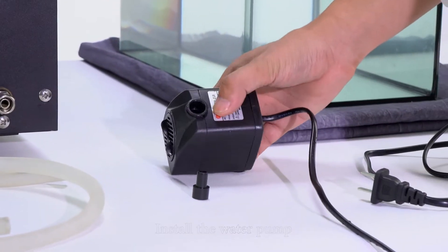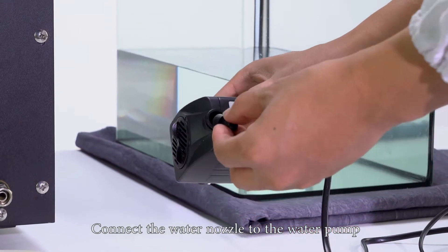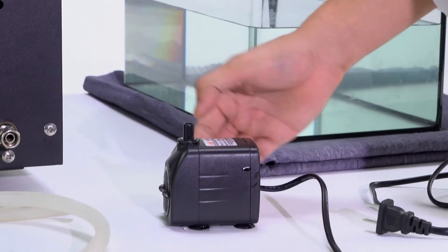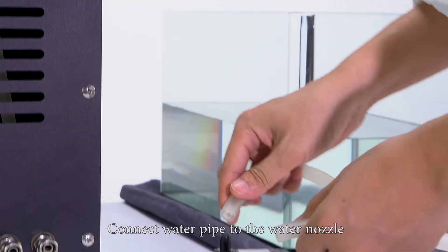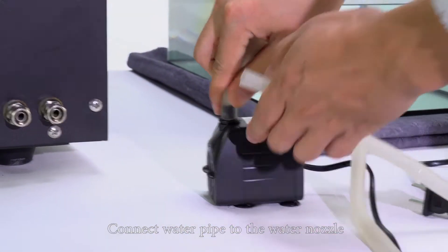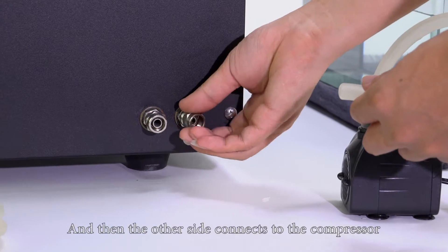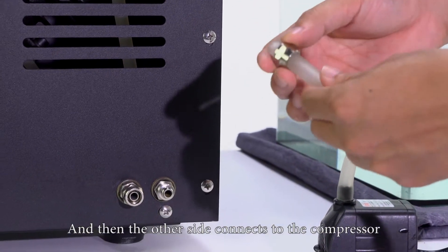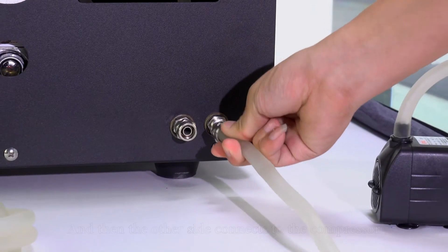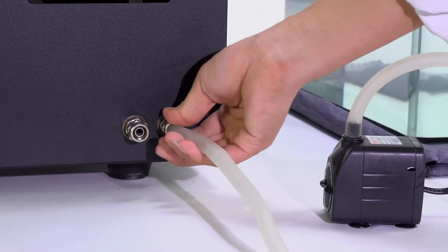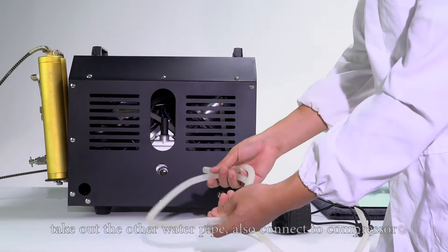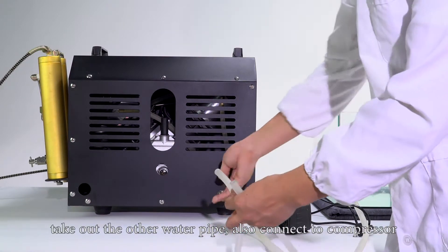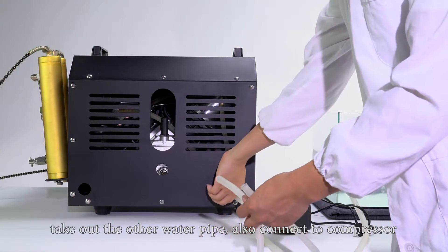Install the water pump. Connect the water nozzle to the water pump. Connect the water pipe to the water nozzle and then the other side connects to the compressor. Take out the other water pipe and also connect to compressor.